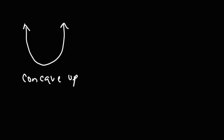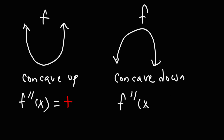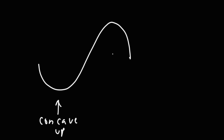The function is concave up when the second derivative is greater than zero, and concave down when the second derivative is less than zero. If we have a shape with the upward U shape, that part is concave up. If it has the downward U shape, that is concave down.